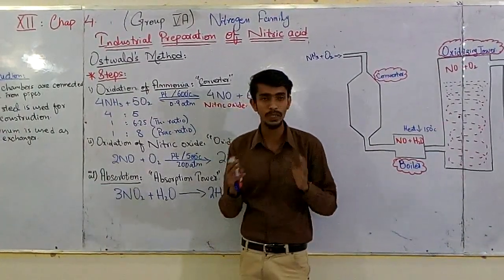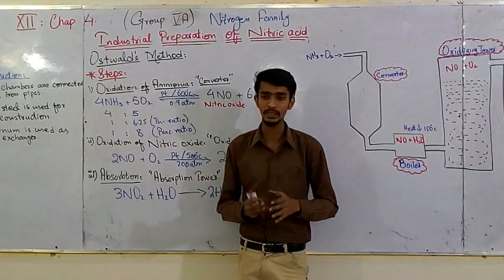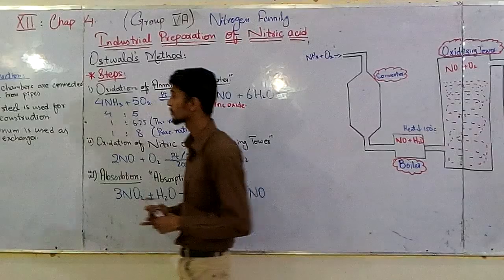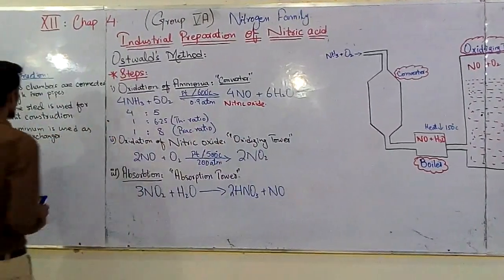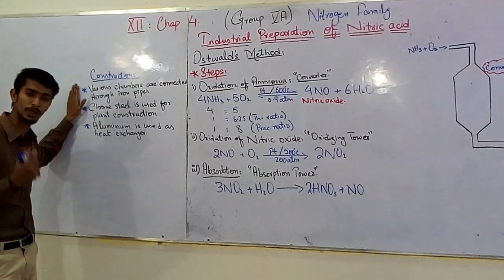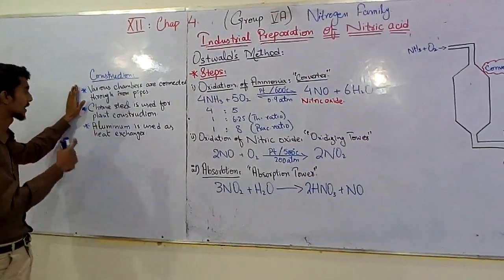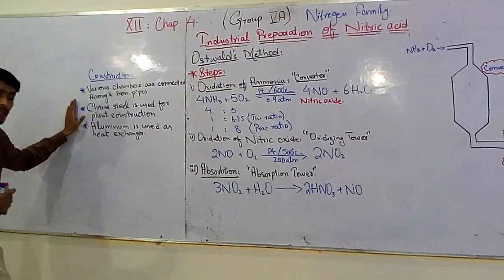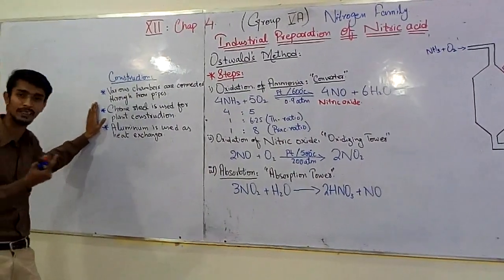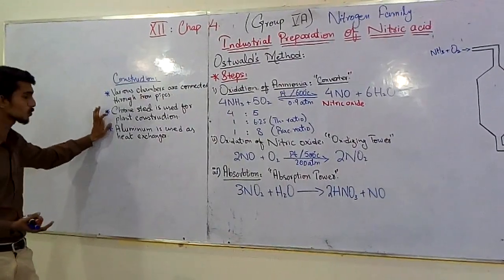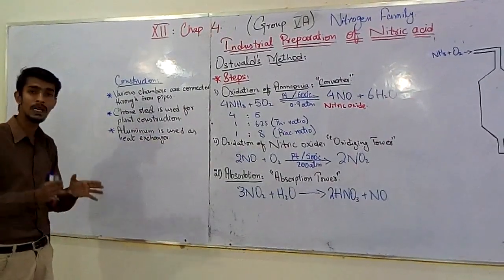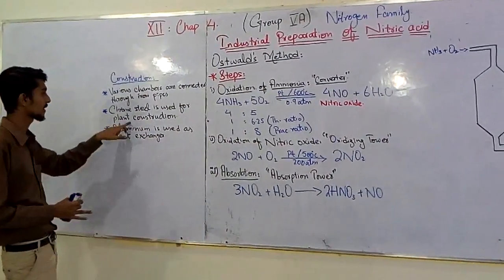First of all, we are looking at the complete process and the construction. We have various chambers which are connected by iron pipes. Chrome steel is used in the plant construction. We know that steel is an alloy. Chrome steel is specifically used for this process.